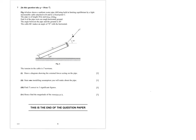So there are quite a few things we need to take care of: the length, the mass, the angles, the rough ground, and so on. We're told the tension in the cable is T Newtons, as shown on the diagram, but we're asked to draw a diagram showing the external forces acting on the pipe.